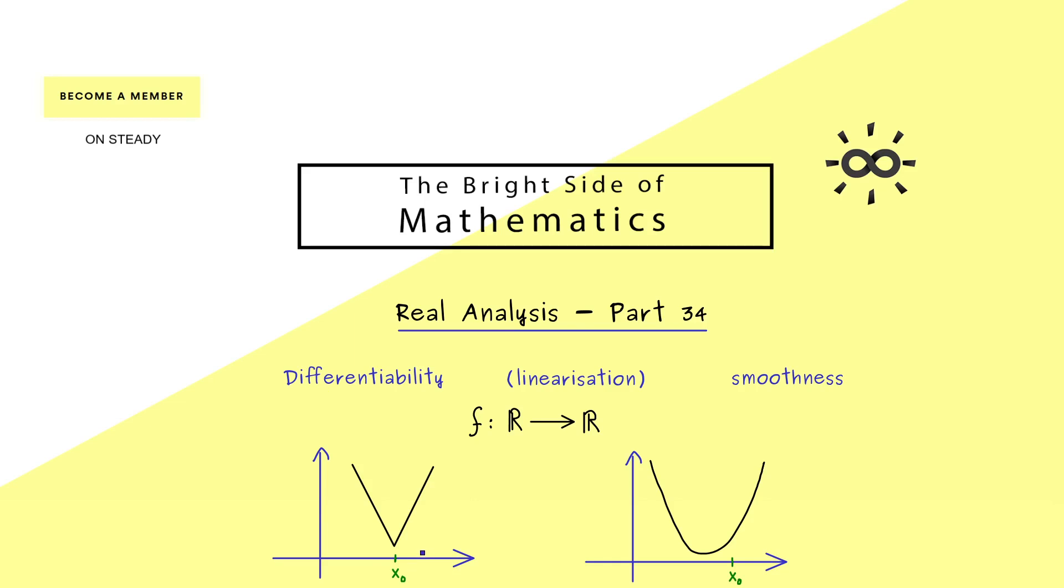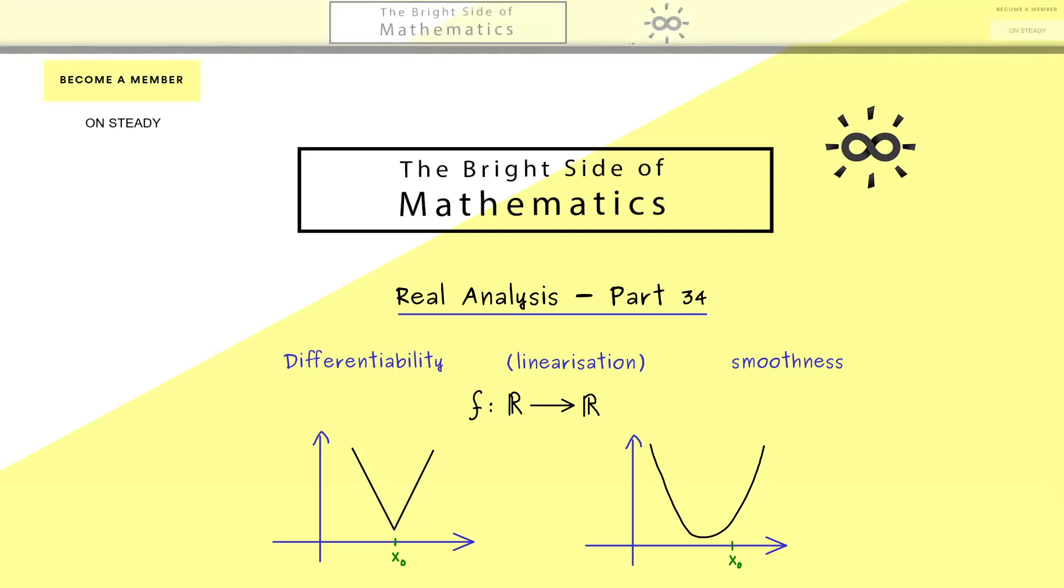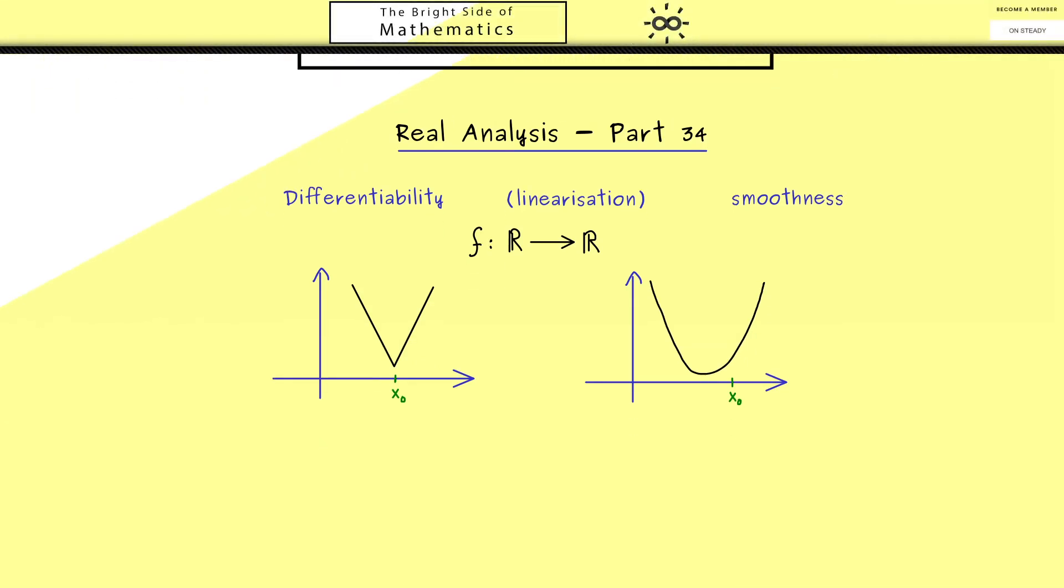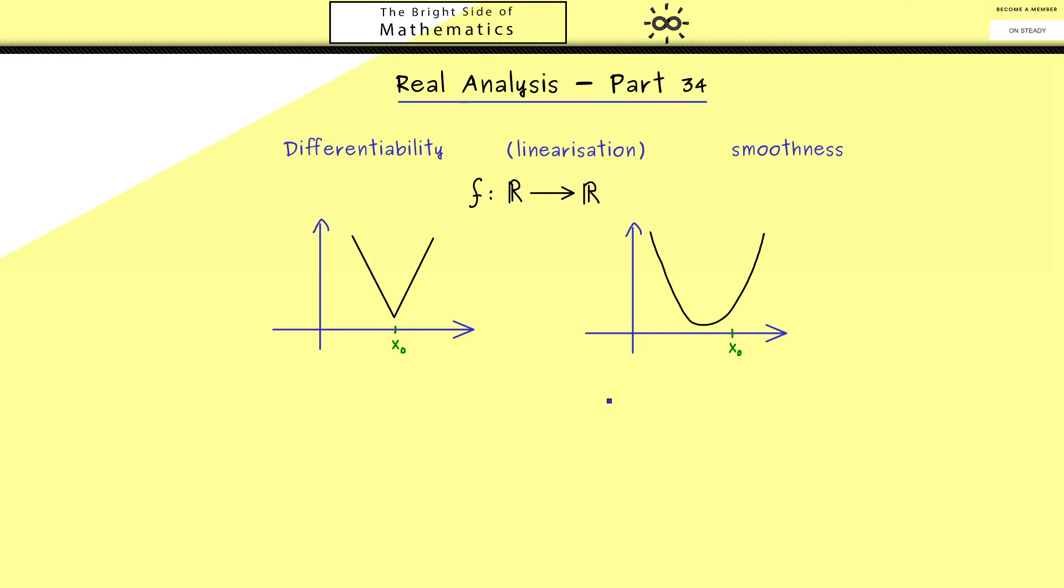So you might already know that differentiability has something to do with the slope at a given point. Hence do we have a slope for this point and do we have a slope for that point. Now for getting a value for this slope we would take a line to approximate this number. So the red line here would be the graph of a linear function where we explicitly have a slope.